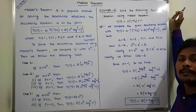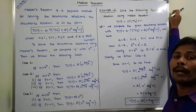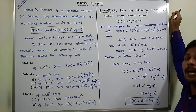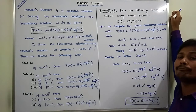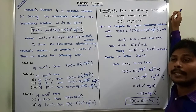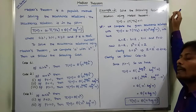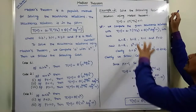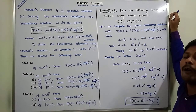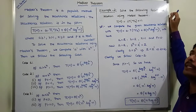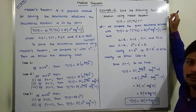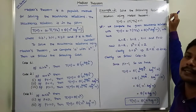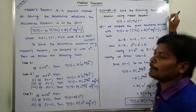The time complexity of the merge sort recurrence relation in best case, average case, and worst case is O(n log n). How we are getting O(n log n) using Master Theorem will be discussed in this video.